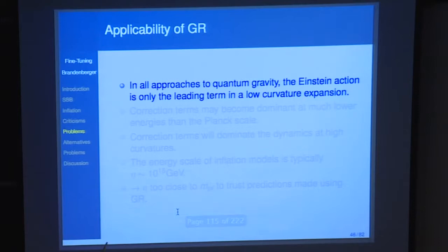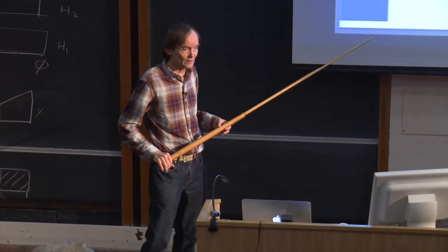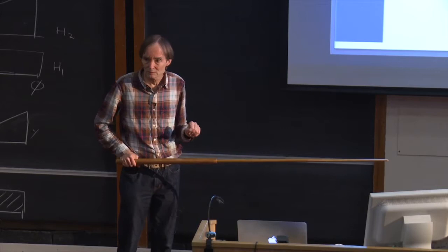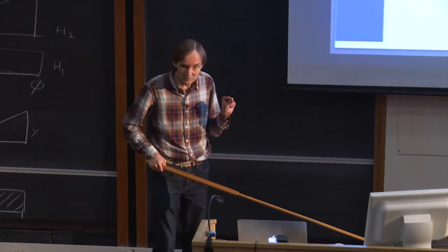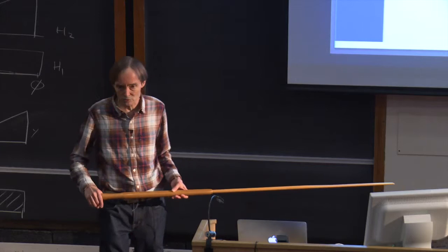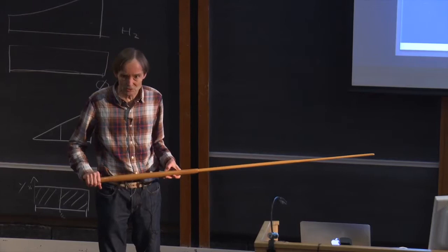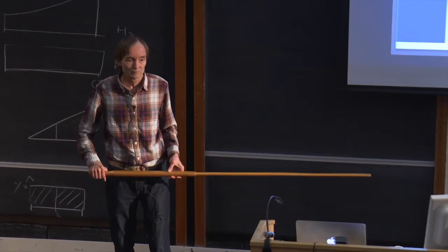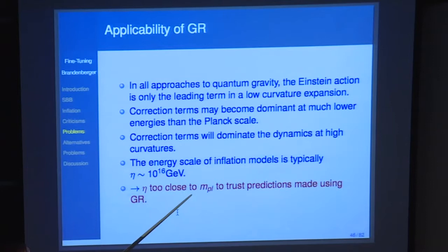Inflation takes place, unless you fine-tune the potential, at very high energy scales — about 10 to the 16 GeV. To put that in perspective: the LHC scale is 10 to the 3–4 GeV, the Planck scale is 10 to the 19 GeV, and the string scale is 10 to the 17 GeV based on Green, Schwarz, and Witten. So the energy scale of inflation is very close to the string scale and quite close to the Planck scale, where general relativity is not even a good approximation. Correction terms will dominate the dynamics, and so I worry that the energy density at which inflation takes place is too close to the string and Planck scales to trust any predictions made with general relativity.